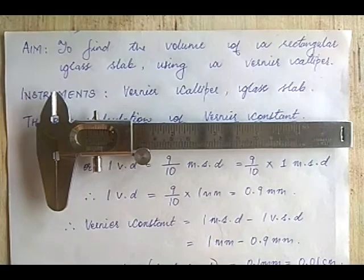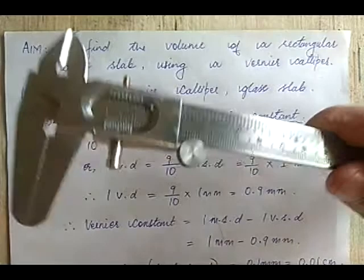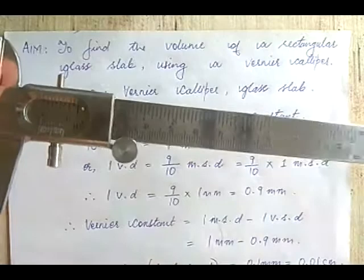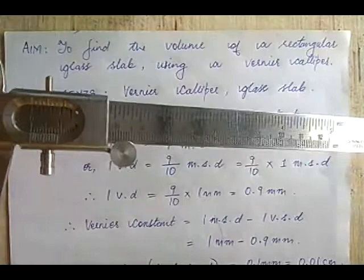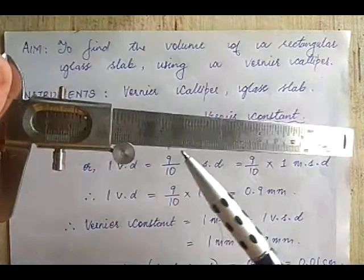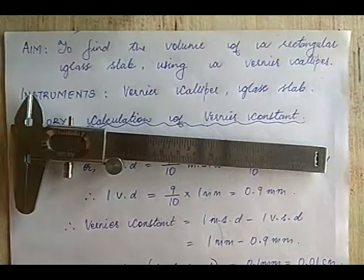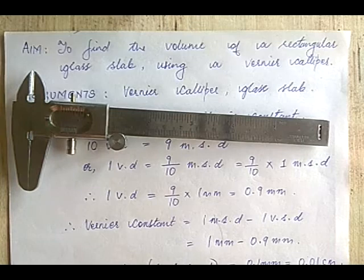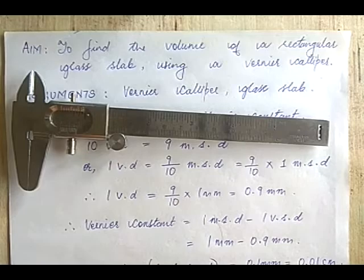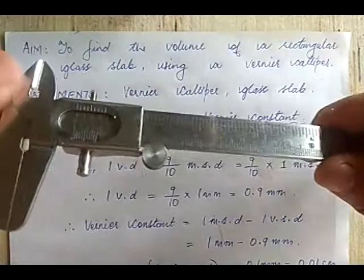The first thing you need to do when you get hold of this instrument is calculate something called its vernier constant, also called the least count of the instrument. The least count is the smallest value or smallest measurement the instrument can make. For example, with a clock at home, one second is the smallest value of time it can measure, so one second is the least count of that clock.